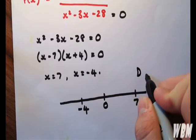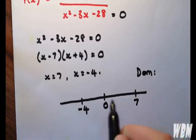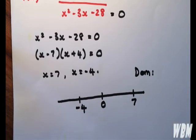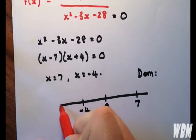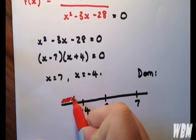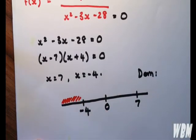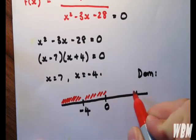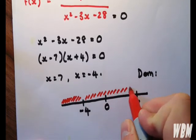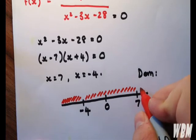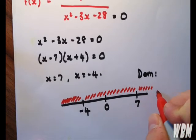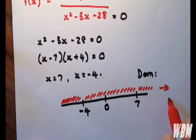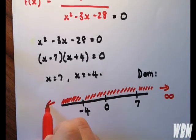then we can essentially put any number up to minus 4, not including minus 4, from minus 4 all the way up to 7, not including 7, and from 7 all the way up to infinity, as is minus 4 with negative infinity.